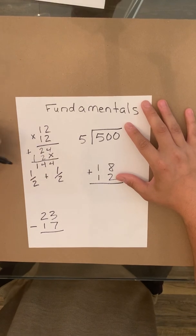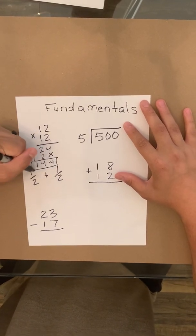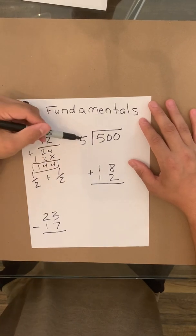So 4 plus 0 is 4, 2 plus 2 is 4, and then you put the 1 right there that makes your answer 144.